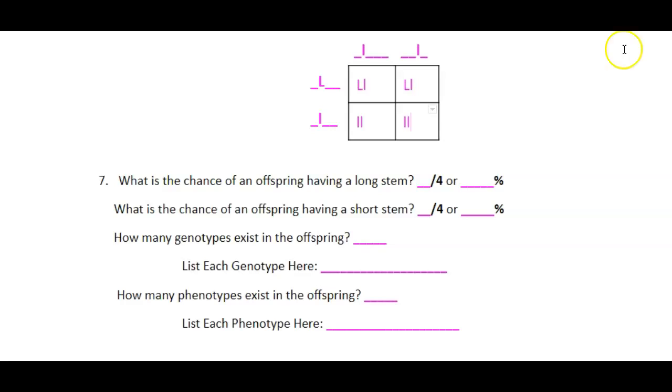So then what is the chance of an offspring having a long stem? Remember, to have a long stem, they have to have at least one capital letter. So both of these are going to have long stems. So two out of four. Two out of four is the same as half, which is 50%.